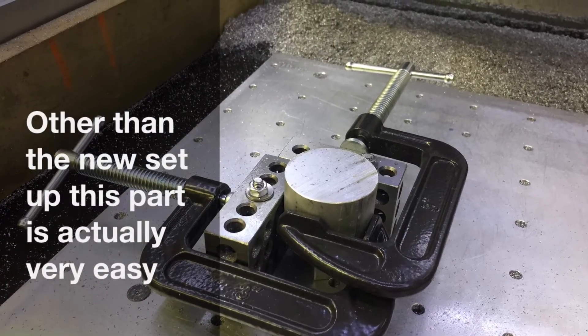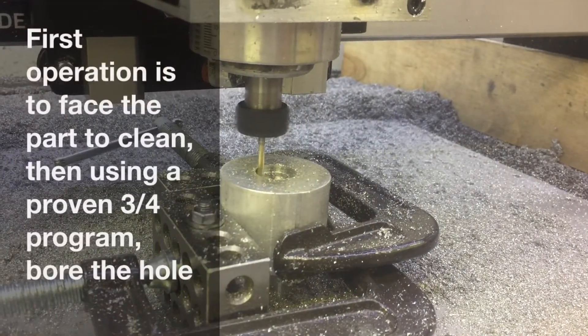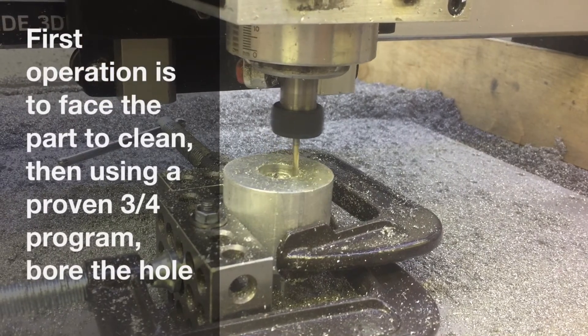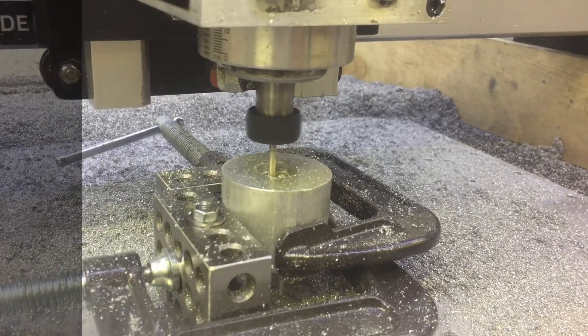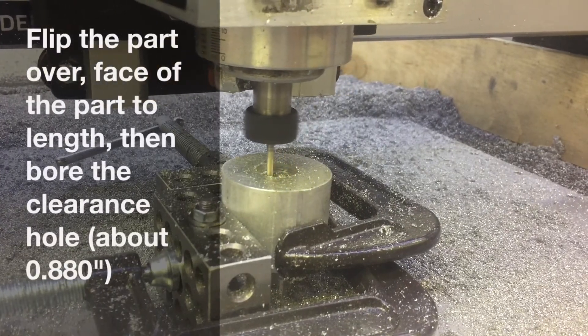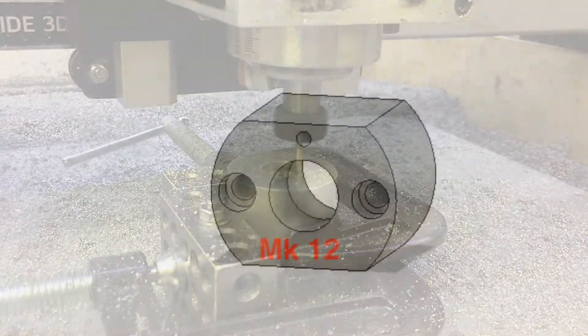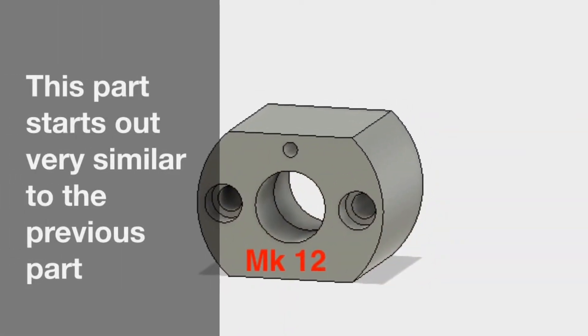Pretty simple - face the part off, use the 3/4 inch bore program that has now been used at least twice. Bore the hole to size, flip the part over, face it to length, and then machine the clearance bore.